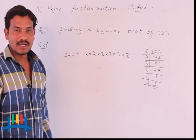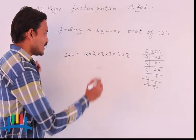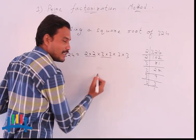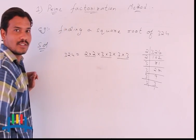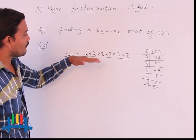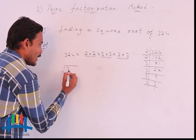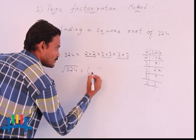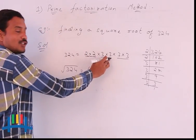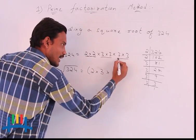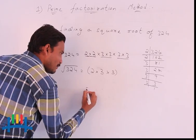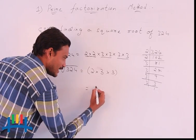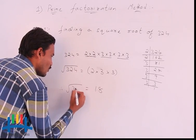After finding the factors, we should make them into pairs of equal factors. Here we have 2 and 2 as one pair, then 3 and 3 as another pair, and 3 and 3 as one more pair. After finding the equal pairs, we should consider only one number from each pair. Multiplying all these: 2 times 3 times 3 is 18. So the square root of 324 is 18.